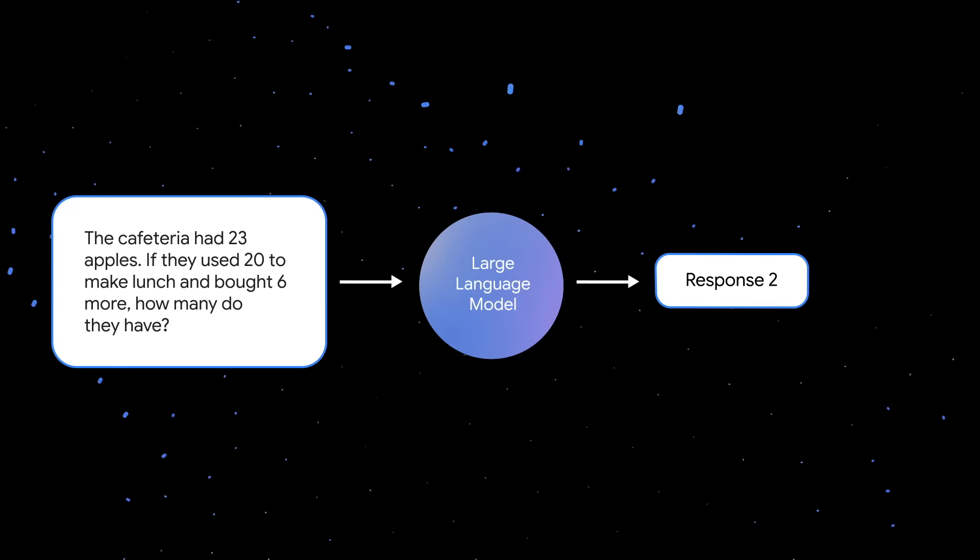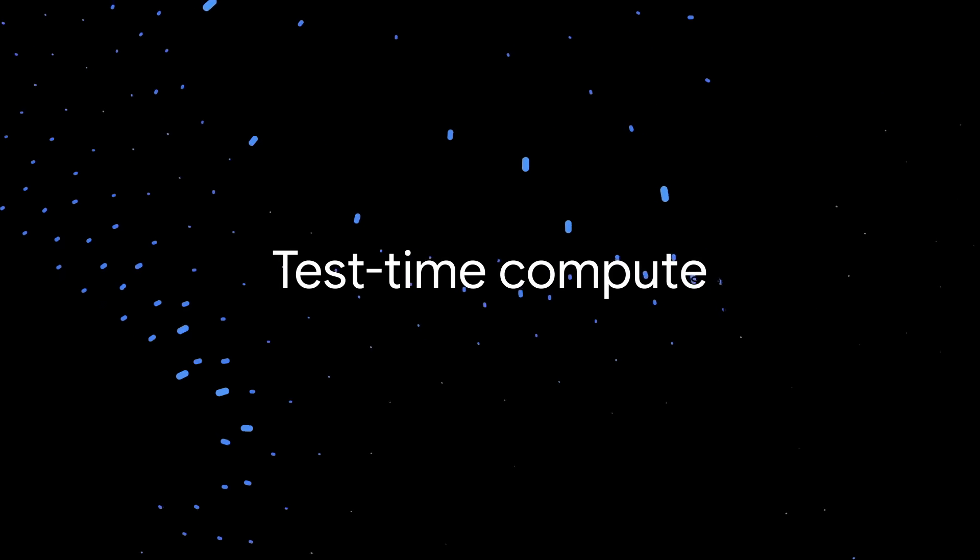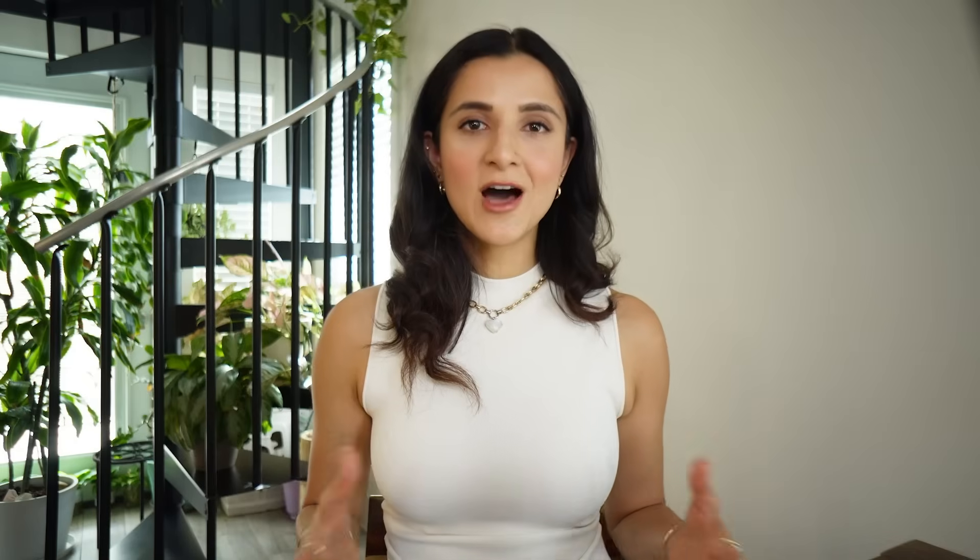Generating 100 responses for a single prompt is definitely going to require more tokens and therefore more compute than generating just one response. Hence, test time compute. The big question is, is it worth all that extra compute? And the answer is, sometimes. Optimizing for frequency can improve model performance, but you might see a plateau in improvements for nuanced tasks where errors just get repeated across the steps of reasoning and multiple responses.